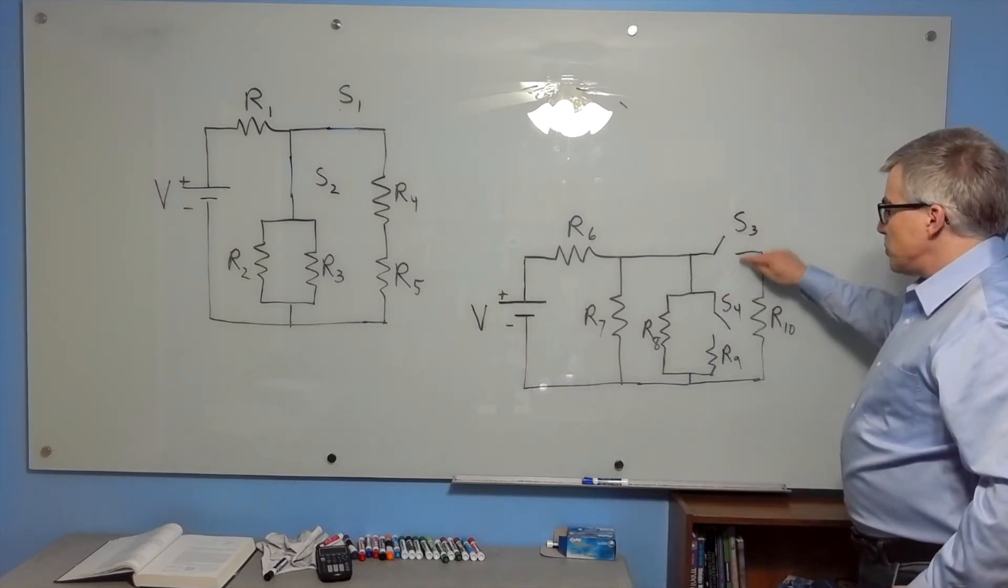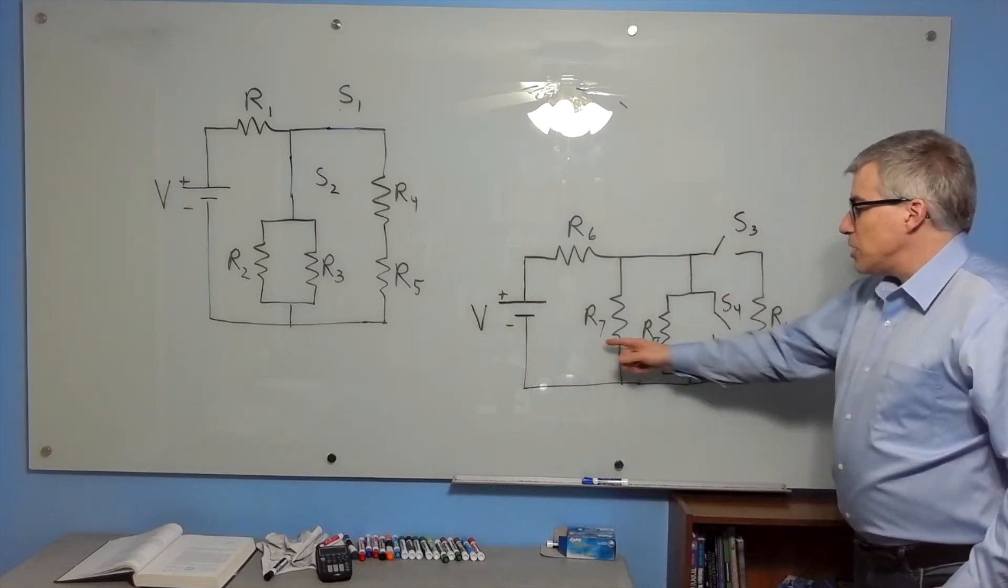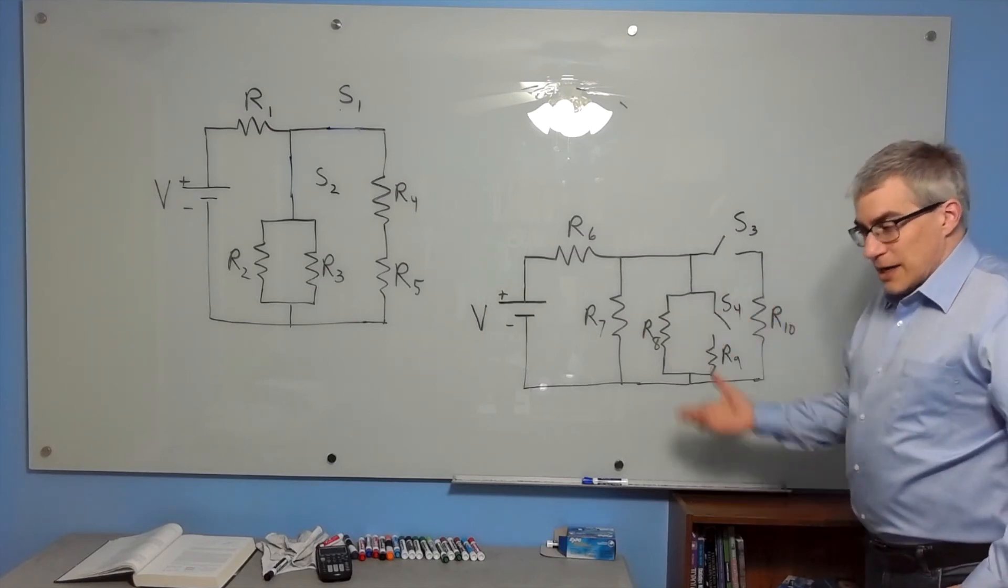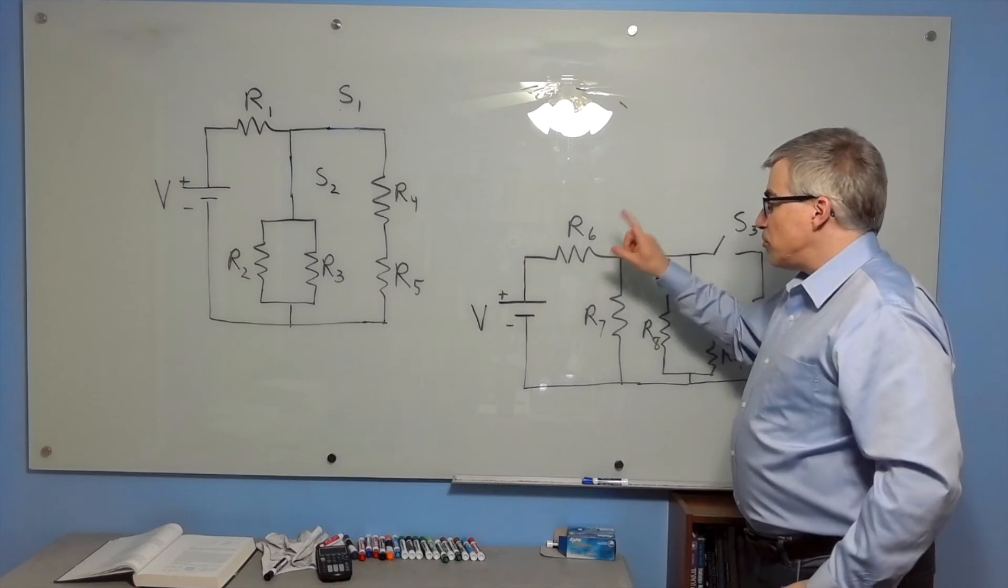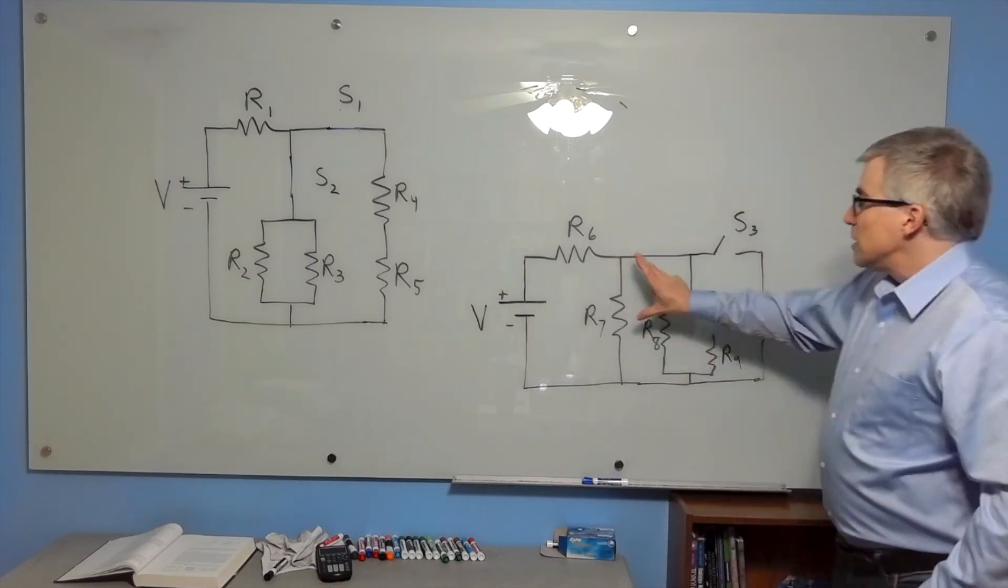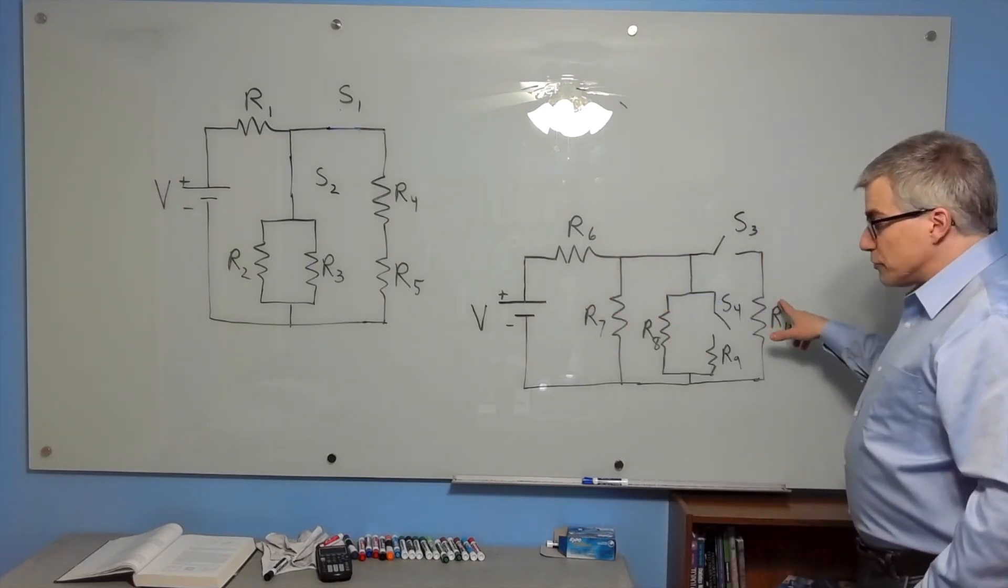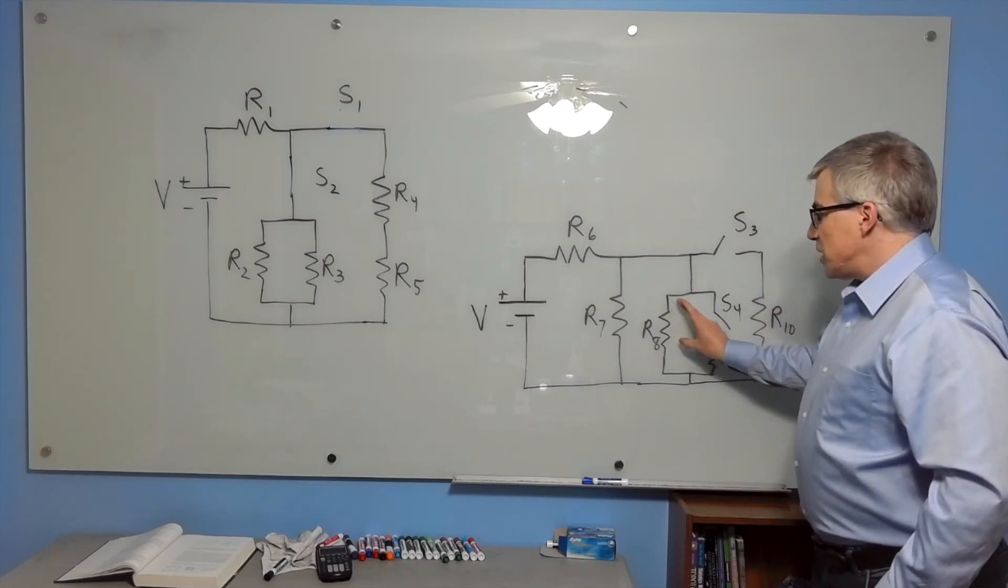if we close switch three, we're adding R10 in parallel with R7 and R8. We're adding a path, total resistance goes down, total current goes up, more voltage here, brighter, less voltage here, dimmer. This turns on, of course, and this would also get dimmer.